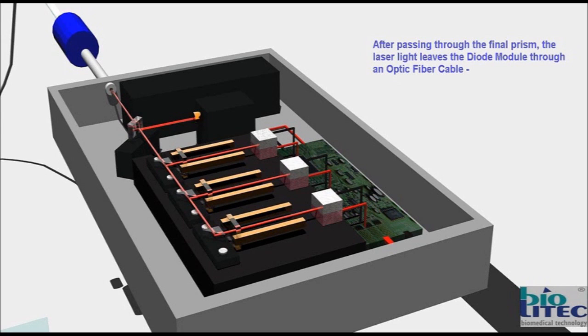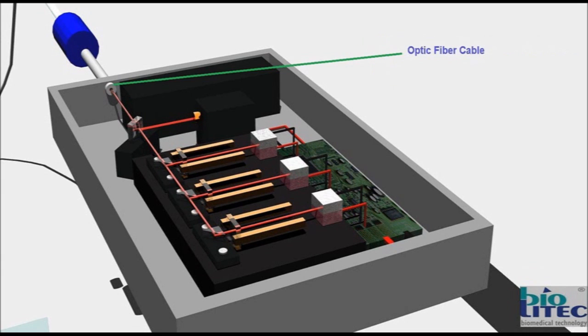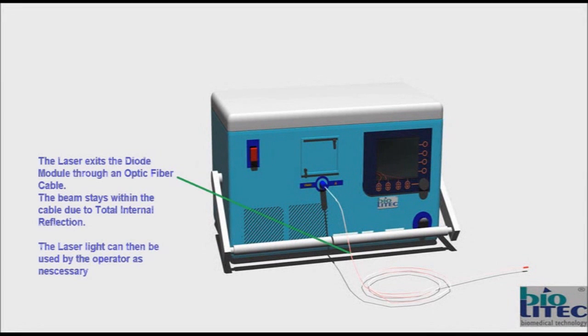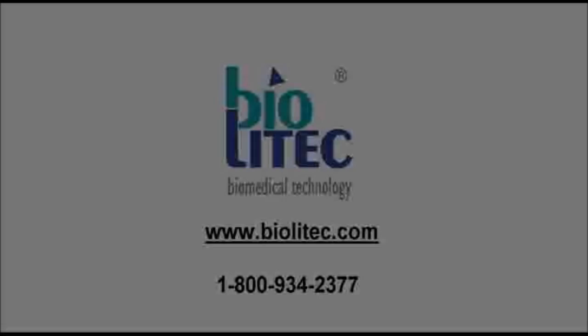After passing through the final prism, the laser light leaves the diode module through an optic fiber cable. The beam stays within the cable due to total internal reflection. The light can then be used by the operator.